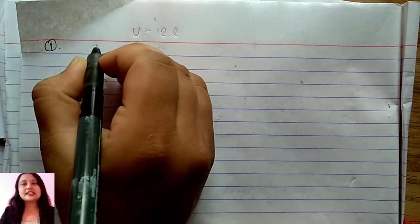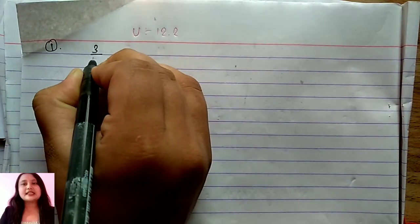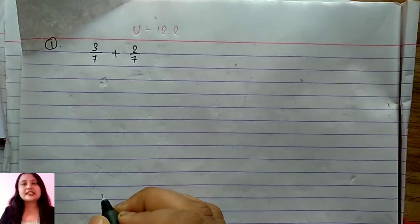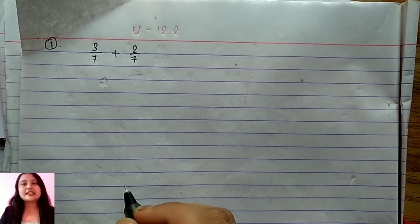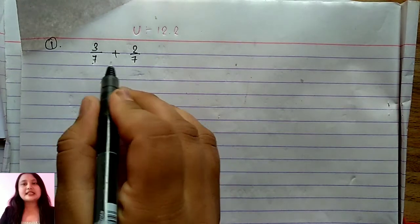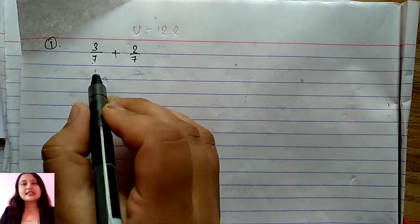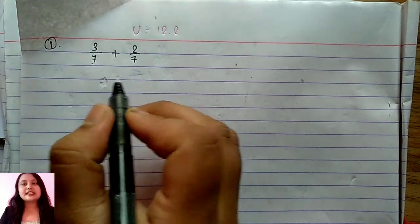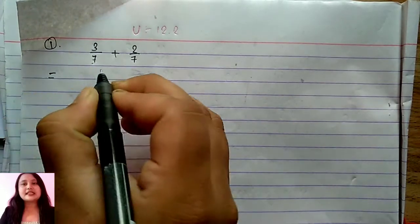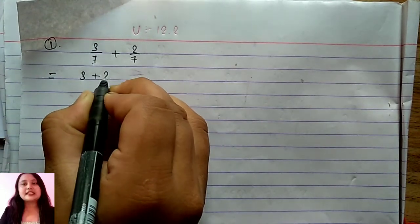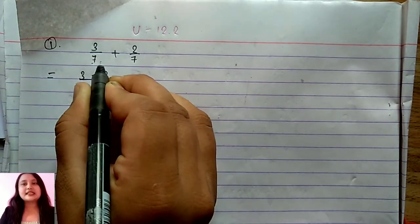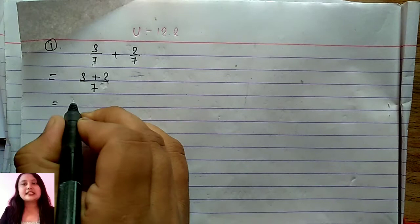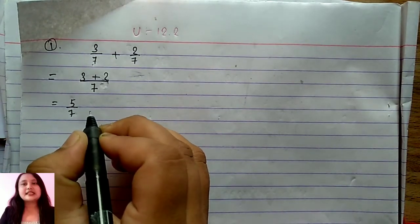Let's talk about the addition first. Suppose 3 by 7 and another 2 by 7 is given to you and we have to add the two fractions. What we should know first is whether the denominators of both fractions are the same. If they are the same, it's very easy to perform the addition. We will take 3 plus 2, and since the denominators are common, we write 7. The answer will be 3 plus 2 equals 5, so 5 by 7.